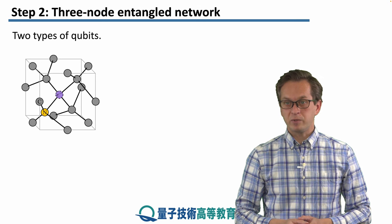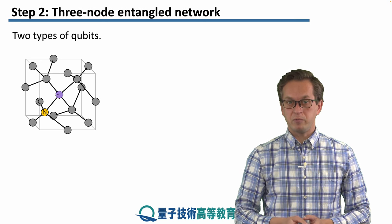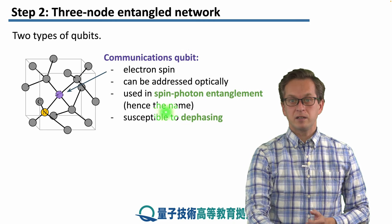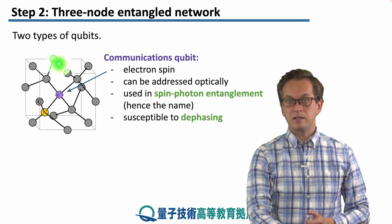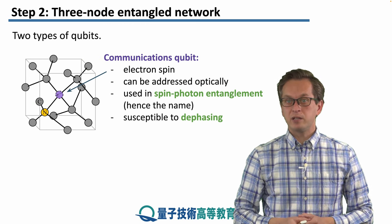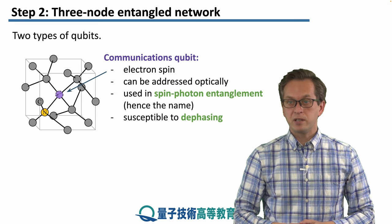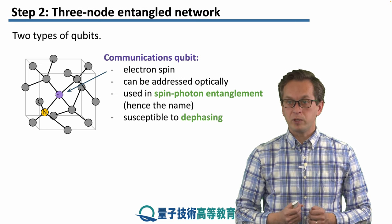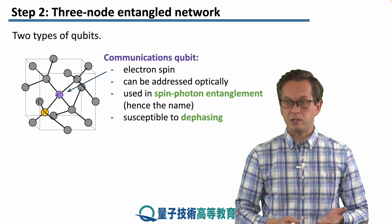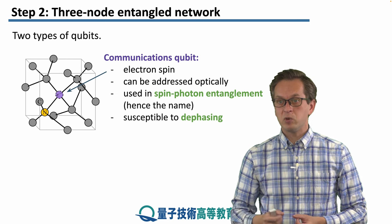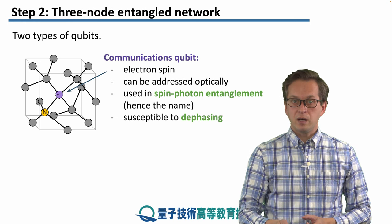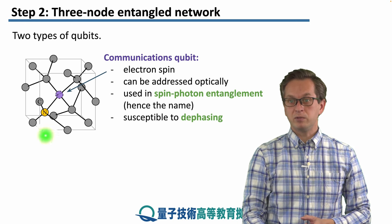Let's talk about the difference between communication qubits and memory qubits. The communication qubit is represented by the electron spin that's captured by the vacancy in the diamond lattice. This qubit can be addressed optically, which means that it can also emit light. Therefore, the communication qubit is used to create spin-photon entanglement, or entanglement between the stationary quantum memory and the flying qubit of the photon — hence it's used for communication. The problem with this qubit is that it's quite susceptible to dephasing.